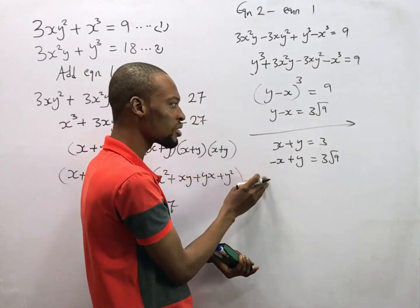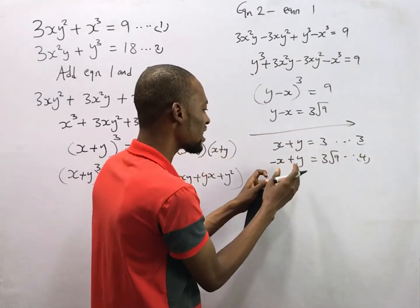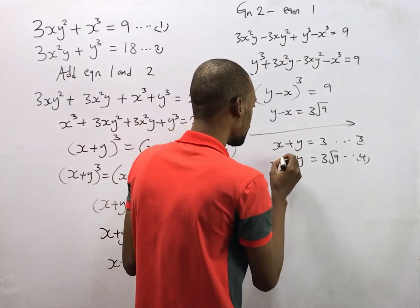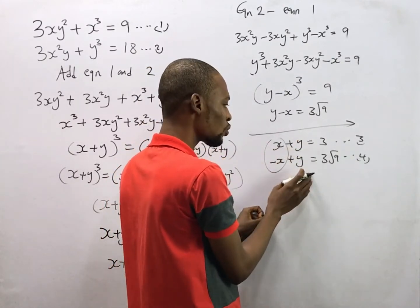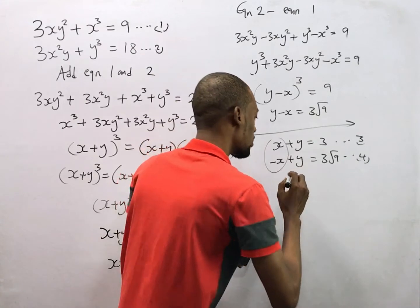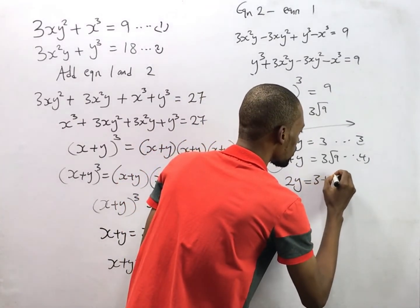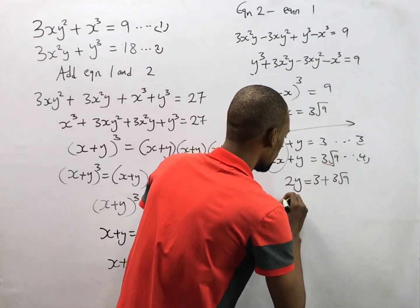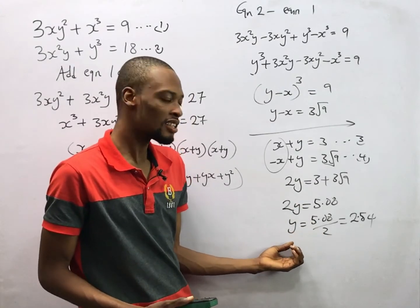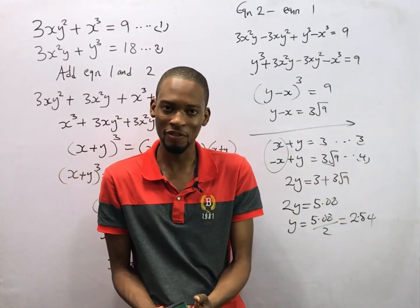Adding both equations — call these equation 3 and equation 4 — the s terms cancel out to give 0, and y + y gives 2y. So 2y = 3 + cube root of 9. We've now gotten the value for y, so let's substitute this value of y into either equation 3 or equation 4.